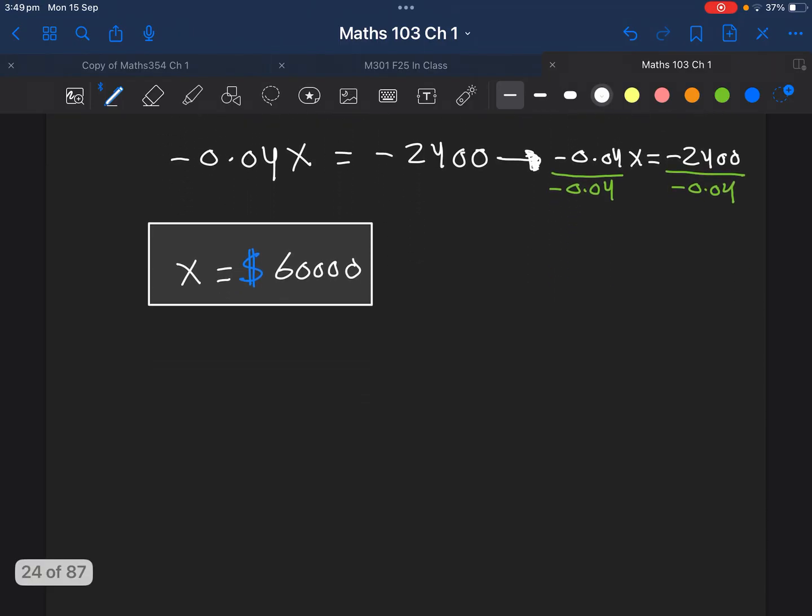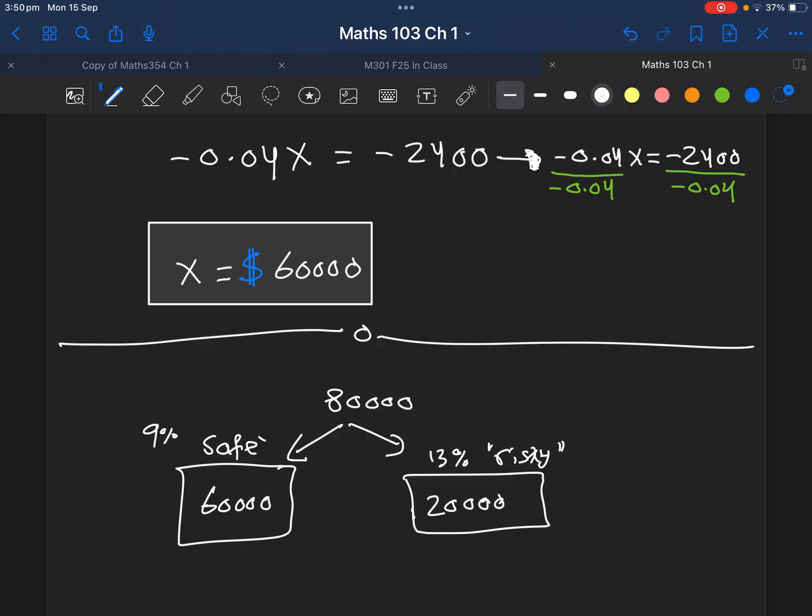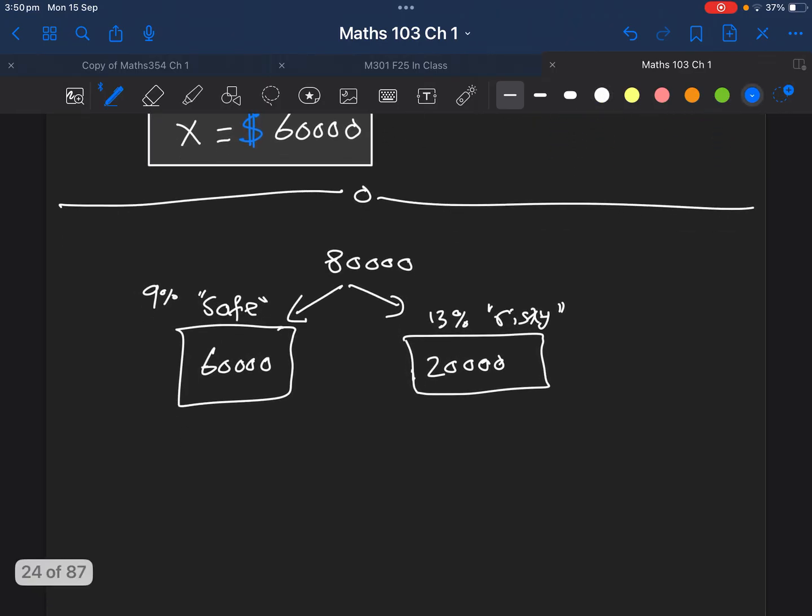If we go back to summarize what happened, we started with 80,000. In the safe investment, the one with the 9%, we put 60,000. The remaining, we should put them in the other one, which is 20,000, the 13% or risky investment. And that's the final answer in dollars.